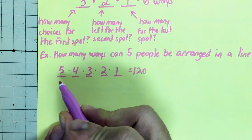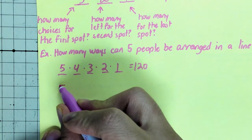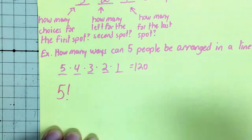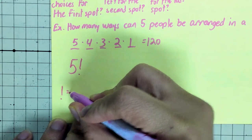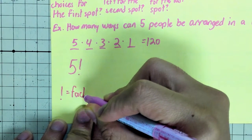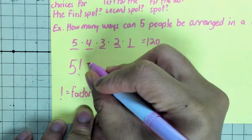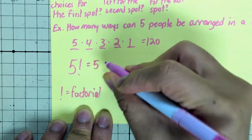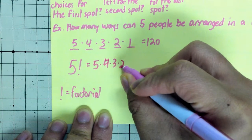Another way to write five times four times three times two times one mathematically, we express that by this symbol. This exclamation point is called factorial. And what factorial means is it's a mathematical operation that tells you to do exactly five times four times three times two times one.